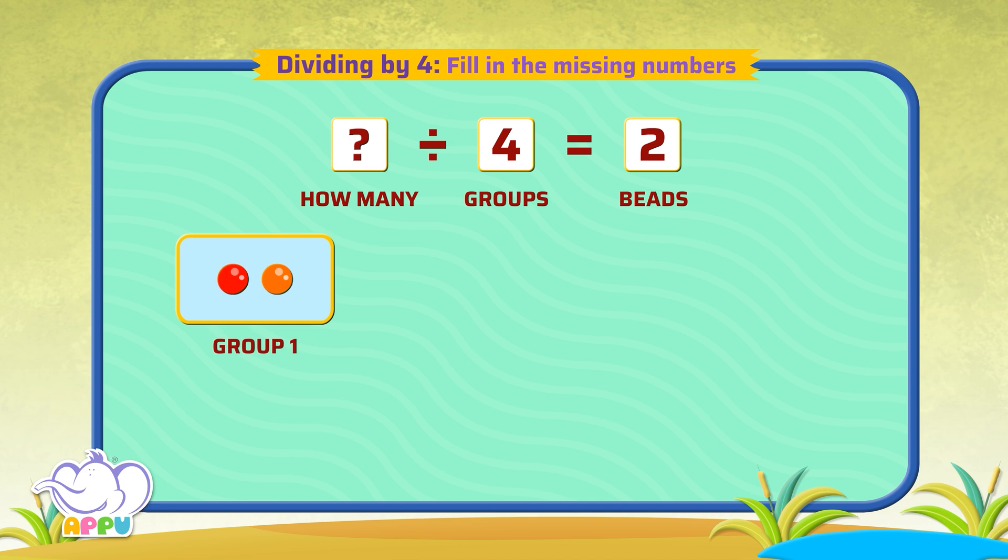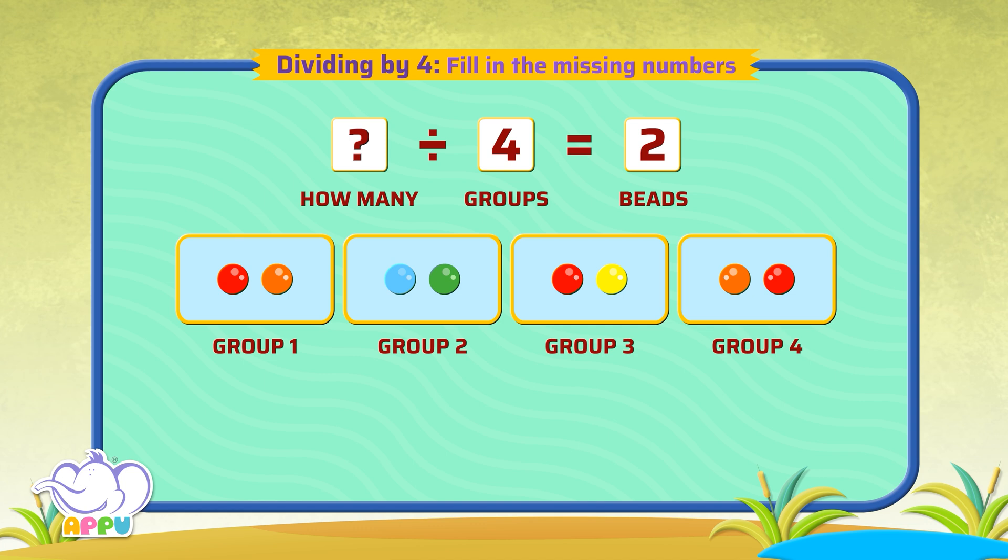We know that 2 beads in 4 groups equals 8. How do we do this?